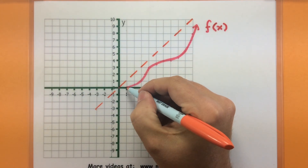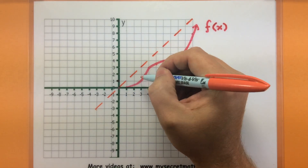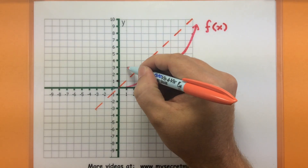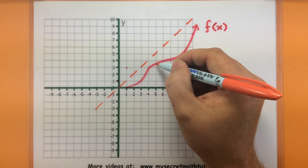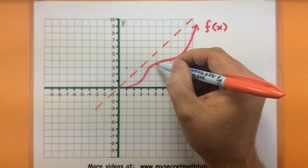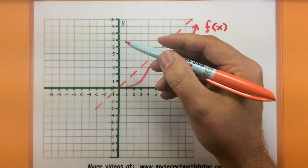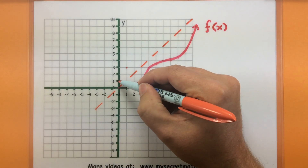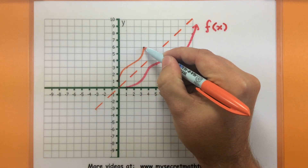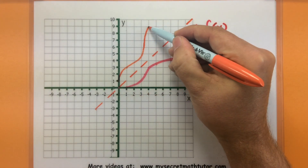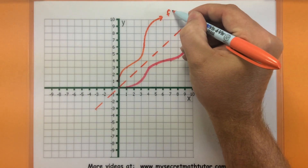So if I have the point (3, 1) on the original, then (1, 3) is going to be on my inverse. This is about (5, 3.5) on the original, so I'd have about (3.5, 5) on the inverse, and all the way up the line — I'm just going to eyeball this in. And that's kind of what the inverse function looks like.